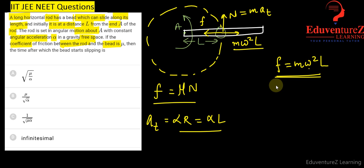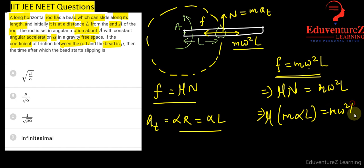Now put the values here. Friction is mu times N equal to M omega square L. So mu N is mass into AT which is alpha L, equals to M omega square L.